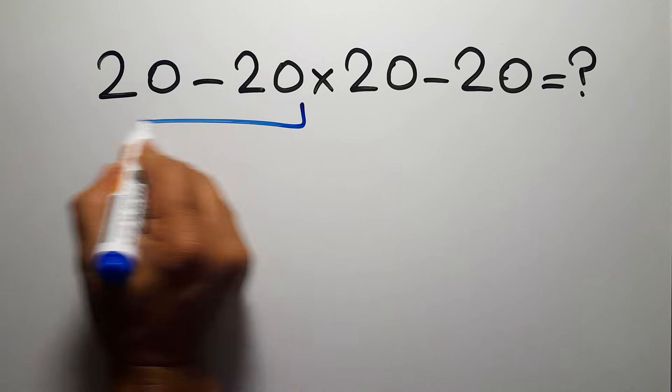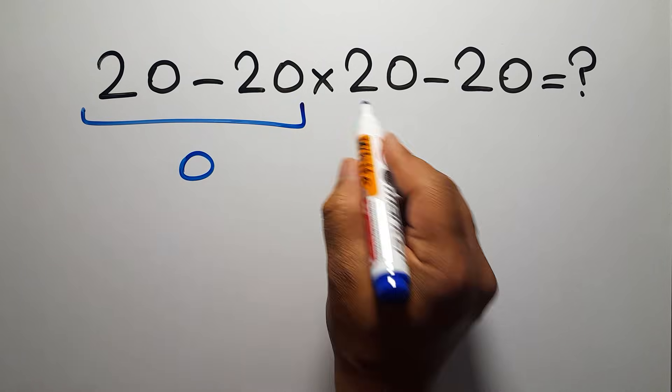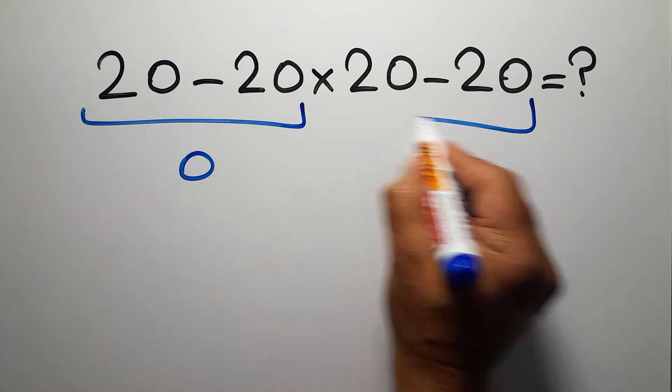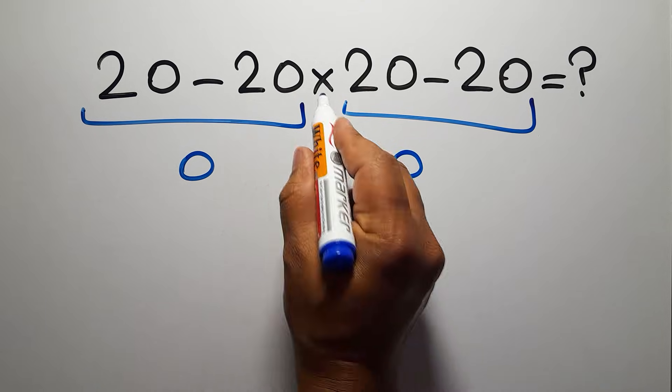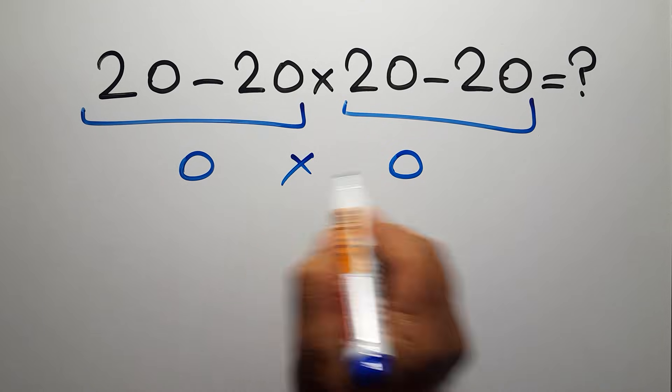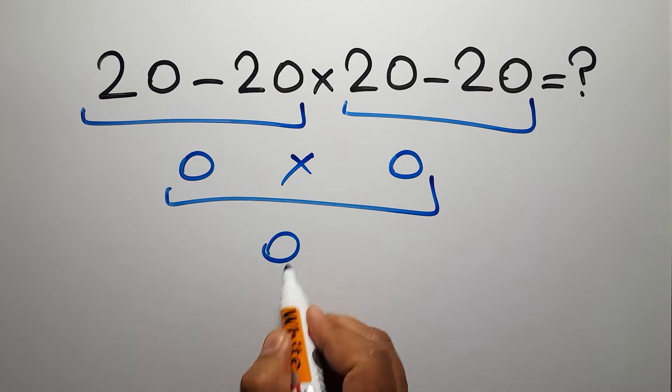20 minus 20 equals 0, and again here we have 20 minus 20, so 0 times 0 is just 0.